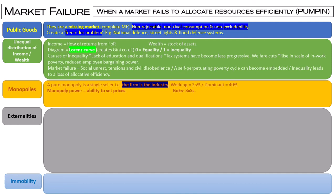Why is monopoly a market failure? They are a market failure because they restrict output and charge higher prices, which creates an allocative inefficiency. They're not allocating resources as much as they should — they're not working at market equilibrium, they're restricting output.